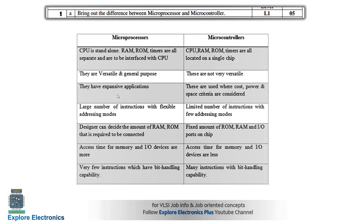The microprocessor can have expensive applications — it can be used for any application, like installing any applications in your system. But the microcontroller is particularly for a specific application. It is designed with respect to cost, power, and space criteria. In a microprocessor, there are a large number of instructions with flexible addressing modes, while in a microcontroller there are a limited number of instructions and fewer addressing modes.